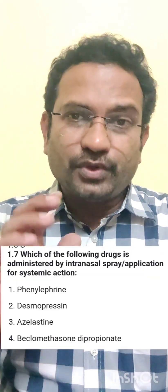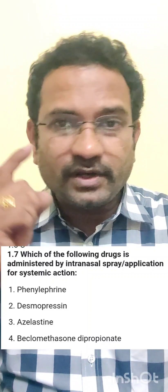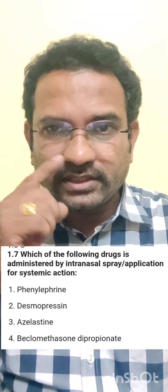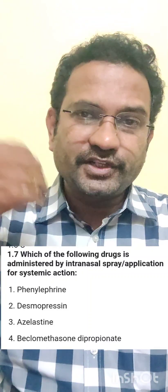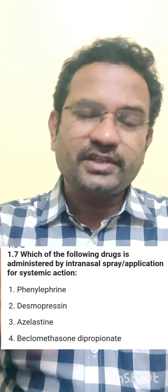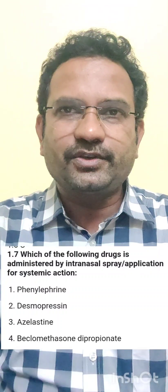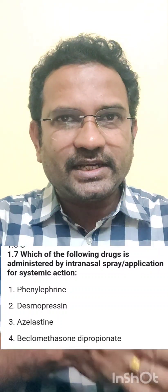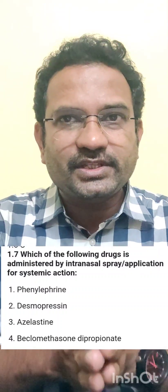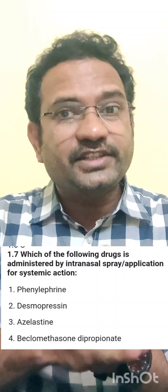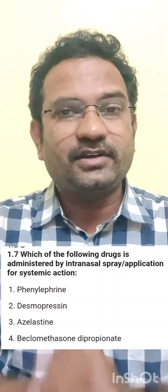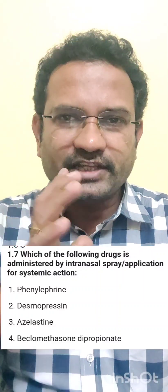So central diabetes insipidus can be treated by desmopressin. Though it is used as a nasal spray, it will not act at the nasal cavity — it gets into the systemic circulation and shows the action. The question asks for an intranasal spray for systemic action, so the answer is desmopressin. I hope this is useful. All the best.